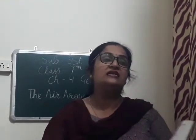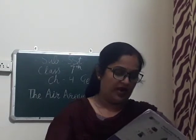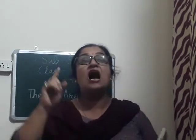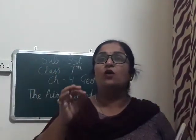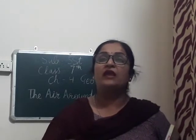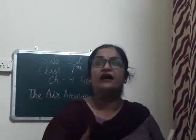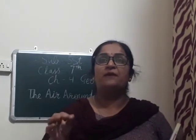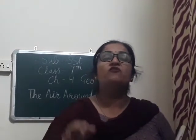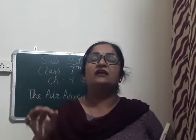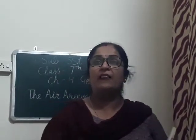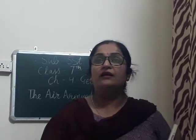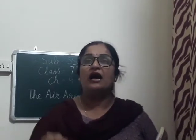The last layer is the exosphere. The exosphere is the outermost layer of the atmosphere. It occurs about 500 kilometers from the surface of the earth. The temperature of this layer is around 5500 degrees Celsius. The air is very thin in this layer and it contains only a few light gases like helium and hydrogen.